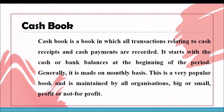Moving to the cash book — it is a book in which all transactions relating to cash receipts and cash payments are recorded. Normally, a business will record two types of transactions: cash transactions and credit transactions. Through the preparation of a cash book, only cash transactions are recorded — it may be cash receipt or cash payment. It is made on a monthly basis and is a very popular book maintained by all organizations, big or small.